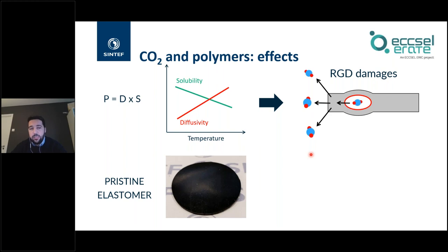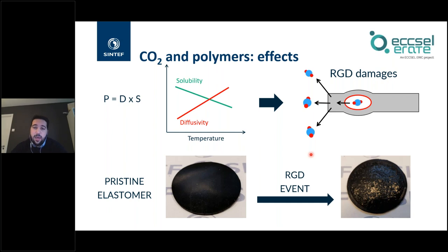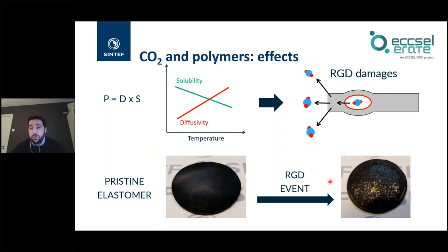Here is a pristine elastomer tested in our laboratory. After rapid gas decompression events at moderate CO2 pressure near room temperature, blistering phenomena — formation of bubbles — can occur, changing the surface properties of the material. An important question then is whether this blistering significantly affects the barrier properties of the material, which is its main function in the system.